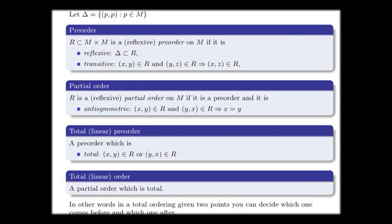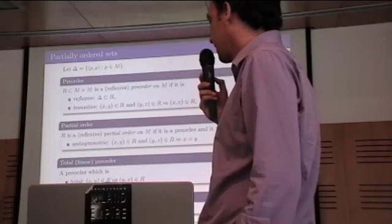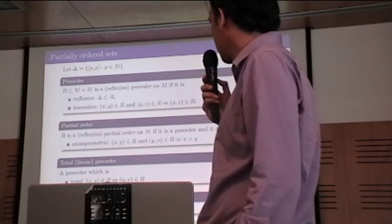Here also we will need what is a total pre-order, which is a pre-order which is total in the sense that you can always compare two elements. And of course, a total or linear order is a partial order which is total.